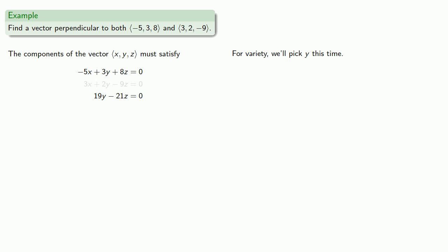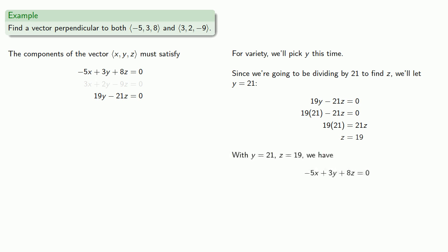Now for variety, we'll pick y this time. And if we look at our equation, we see that if we're going to solve for z, we're going to need to be dividing by 21. So since we're going to be dividing by 21 to find z, we'll let y equal 21. And solving for z. And with y equal 21, z equals 19, we can solve for x. And we get our solution, the vector (43, 21, 19).